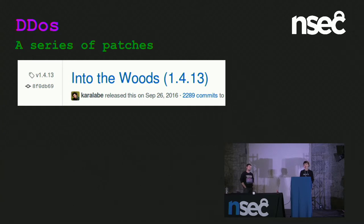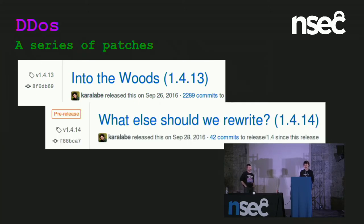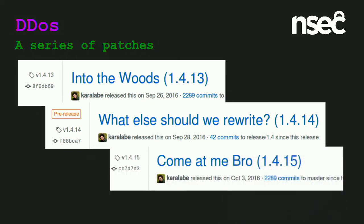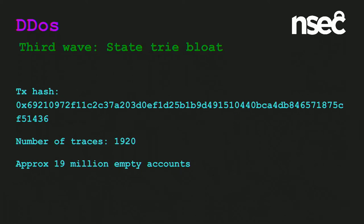Over the course of DevCon, the core devs frantically released a series of patches, amongst other things trying to optimize EXTCODESIZE. The patches had names like 'Into the Woods,' 'What Else Should We Rewrite?' and 'Come At Me, Bro.' For a while everyone again thought everything was going to be fine — but the attacker wasn't done.